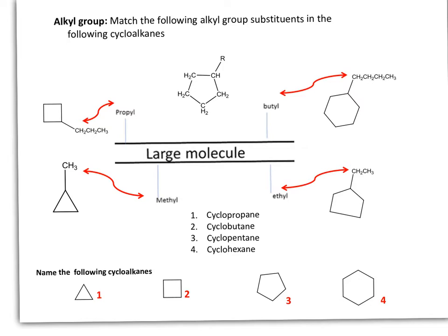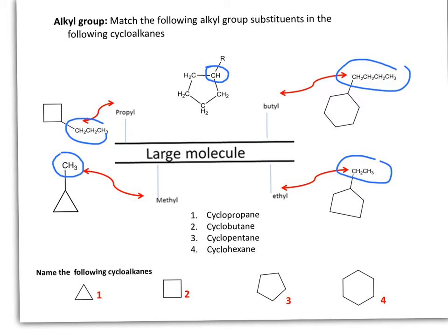Before we explore more complex alkyl groups, it is important to review the primary alkyl substituents. We are showing the alkyl groups methyl, ethyl, propyl, and butyl. All of these are attached to a cycloalkane. It is important to observe that when we have one substituent only on a cycloalkane, we no longer have two hydrogens at that point — we have one hydrogen left. The name of the alkyl group will precede the name of the cycloalkane.